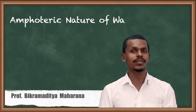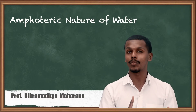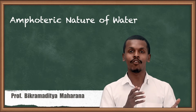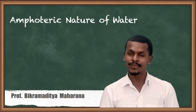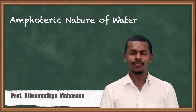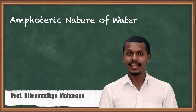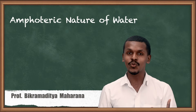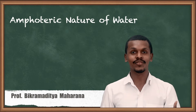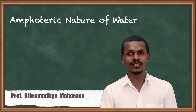Hi friends. In the previous lecture we got to know about what is Lowry-Bronsted Acid as well as Lowry-Bronsted Base. We also covered what is Conjugate Acid and what is Conjugate Base. Now, while giving the example of Lowry-Bronsted Acid and Base, we mentioned that H₂O was acting like a base as well as acting like an acid. So this makes water to be amphoteric in nature.